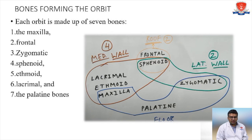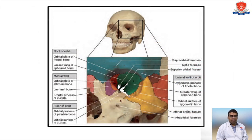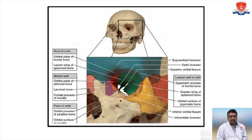The roof of the orbit is formed by the orbital plate of the frontal bone and the lesser wing of the sphenoid. The medial wall is formed by the orbital plate of the ethmoid, lacrimal bone, and frontal process. The floor is formed by the orbital process of the palatine bone and orbital surface of the maxilla. Key foramina include the supraorbital foramen, optic foramen, superior orbital fissure, inferior orbital fissure, and infraorbital foramen. The lateral wall is comprised of the zygomatic process of the frontal bone, greater wing of the sphenoid bone, and orbital surface of the zygomatic bone.